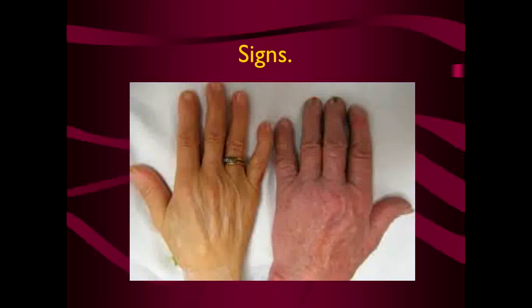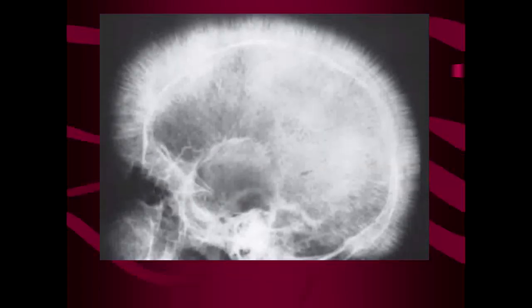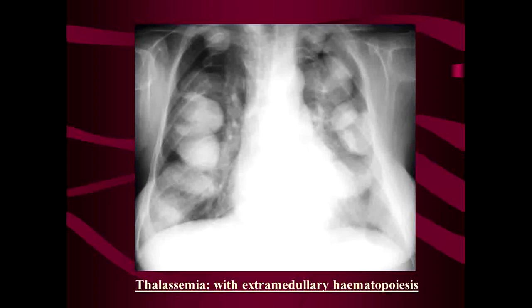This patient has normal skin color, while this patient has both anemia and yellow discoloration of the hand, indicating anemia and jaundice. In the imaging, you can see an X-ray showing frontal bossing because of cranial bone thickening and overgrowth of the zygomatic bone. This patient also has jaundice. The X-ray demonstrates expansion and a hair-on-end appearance, which is a classical hallmark X-ray finding of beta-thalassemia major. These are over-expansions of the anterior ends of the ribs due to extramedullary hematopoiesis ongoing in the ribs.